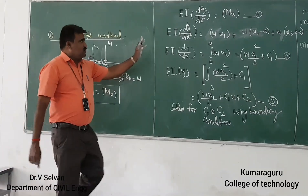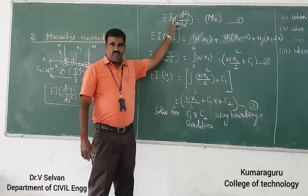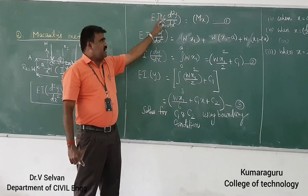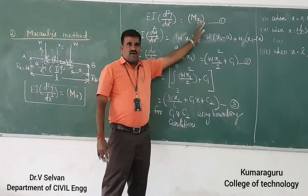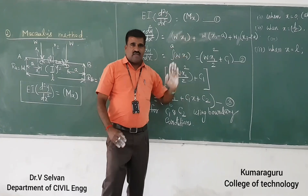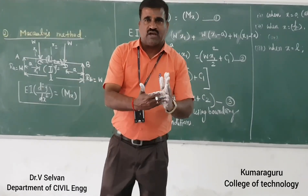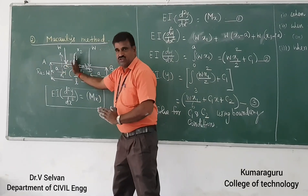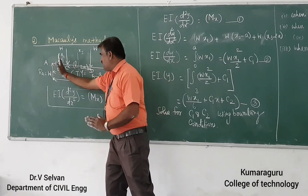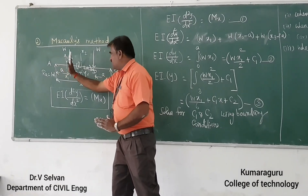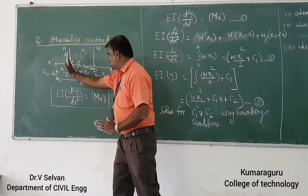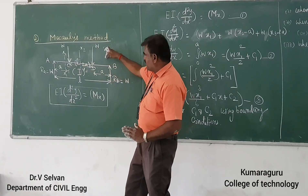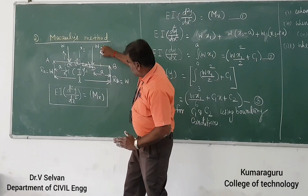Now we write the basic equation of bending moment: EI d²y/dx² = Mx, where Mx is the bending moment at the required section. I have to form three different equations: one for region A-C, a second for region C-D, and a third for region D-B.